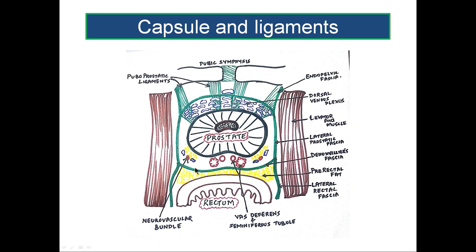The fascia of Denonvilliers, going into this fascial sheath, divides it into two parts: an anterior part in relation to the prostate called the lateral prostatic fascia, and a posterior part related to the rectum called the lateral rectal fascia. Anteriorly it becomes continuous with the endopelvic fascia lining the parietal wall.